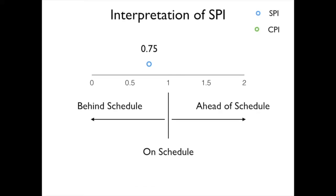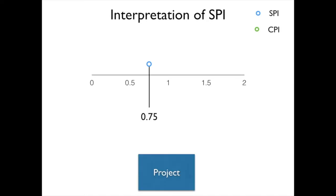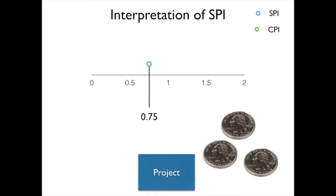Another way to think of this is to think about the money that we're using on our project. And we can say that if we have an SPI of 0.75, that for every dollar that we put into our project, in terms of schedule, we're only getting $0.75 worth of value.